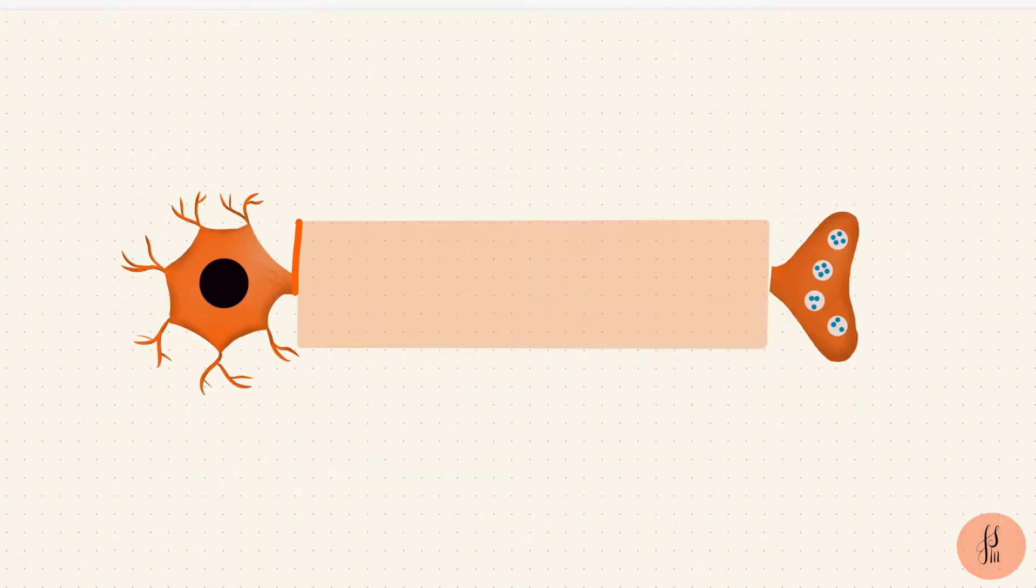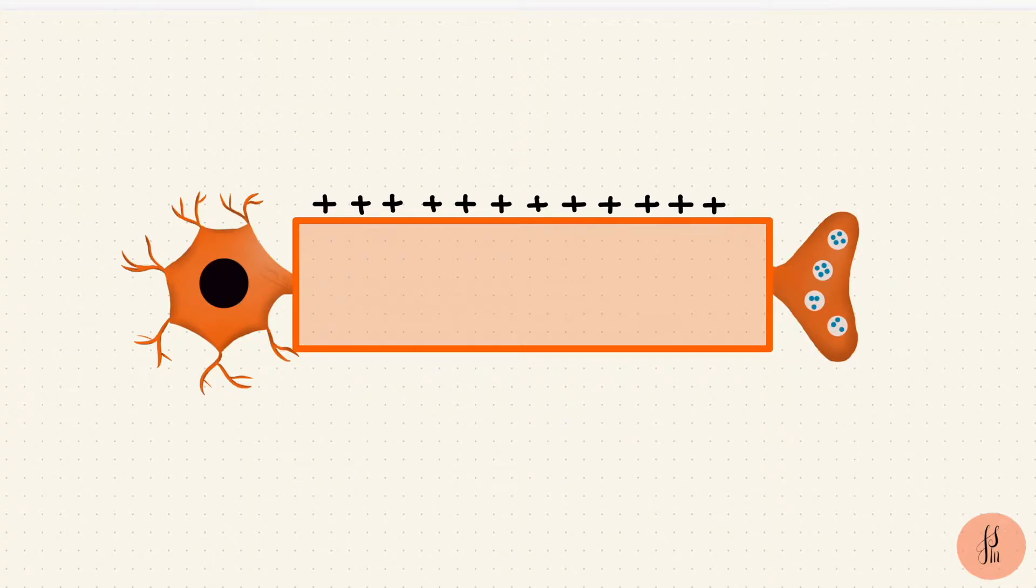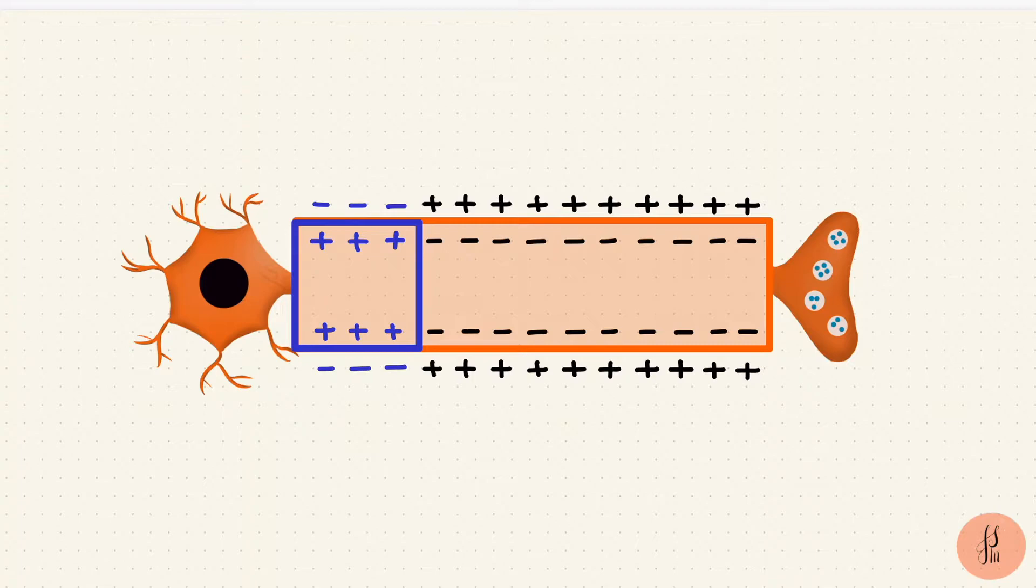I'm going to turn this axon into a rectangle so that I can put in the potentials. At rest, the membrane potential is negative. When the action potential starts, this becomes our active site. There's depolarization. The membrane potential is becoming more positive. This area forms a current sink.